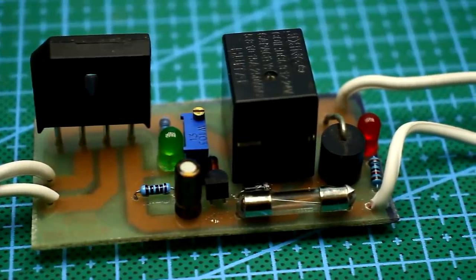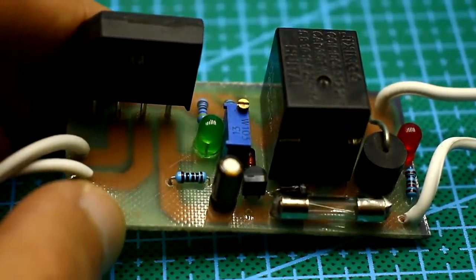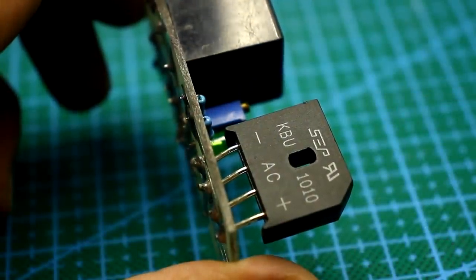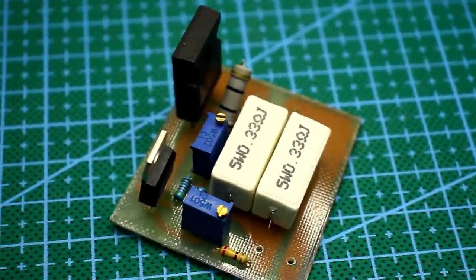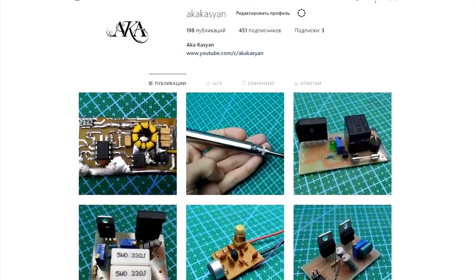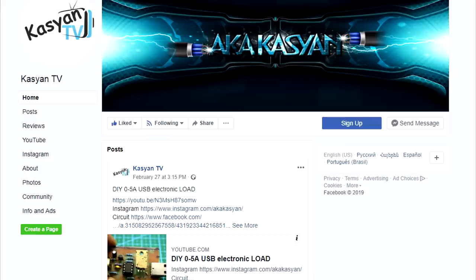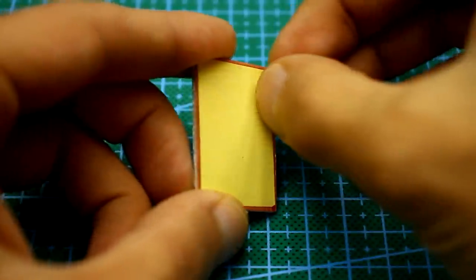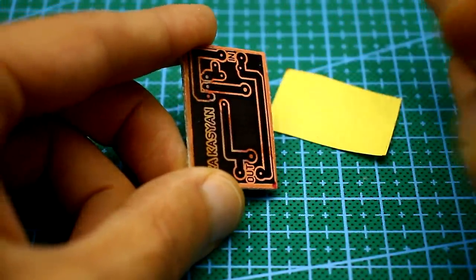In the following videos, I will show you how to make a full-fledged charger from this simple circuit with current limiting function and protection against polarity reversal. All the necessary links are in the description, including a link to my Instagram, where I regularly upload photos of new projects. If you have questions related to electronics, ask them in our group. Now I say goodbye until new meetings. With you, as always, was KasyanTV.